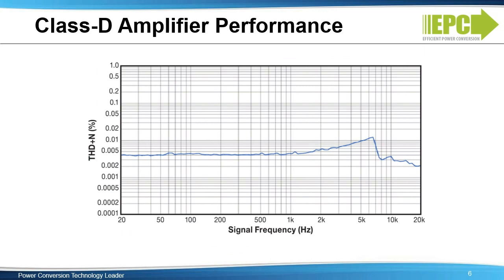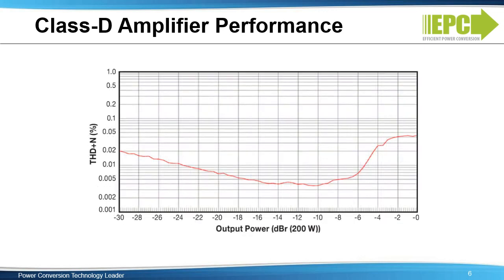This Class D amplifier has very low THD plus noise across both signal frequency and power range due to the precise switching of the GaN transistors. This Class D amplifier has a maximum of 0.012% THD plus noise in a frequency range from 20 Hz to 20 kHz at minus 9 dB relative to 200 watt output into an 8 ohm speaker load, as shown here with THD plus noise on the vertical axis and frequency on the horizontal axis. This graph shows THD plus noise on the vertical axis at 1 kHz of less than 0.05% at full load, and approximately 0.005% at minus 10 dB relative to a 200 watt output.